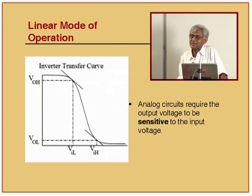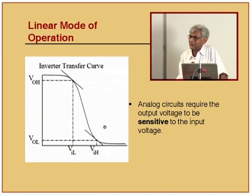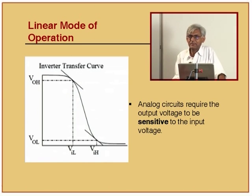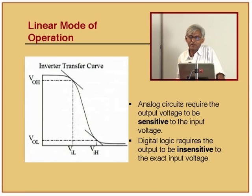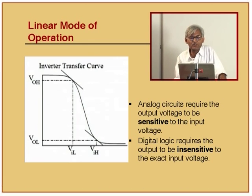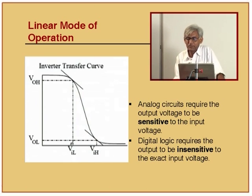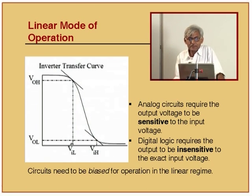As we discussed yesterday, analog circuits require the output voltage to be sensitive to the input voltage - essentially they want dV0/dVi to be high. On the other hand, digital circuits require the output to be insensitive to the exact input voltage. If you are designing a circuit for the analog regime, circuits need to be biased for operation in the linear regime.